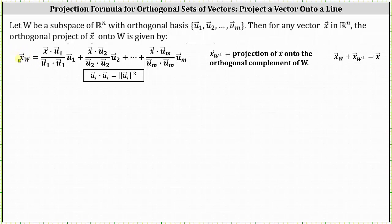This notation is used to denote the orthogonal projection of vector x onto W. Analyzing the formula, we should be able to recognize a pattern. Looking at the first product, the numerator of the fraction has vector x dotted with vector u_1, where u_1 is the first vector in the orthogonal basis. Then we divide by vector u_1 dotted with itself, and multiply by vector u_1.